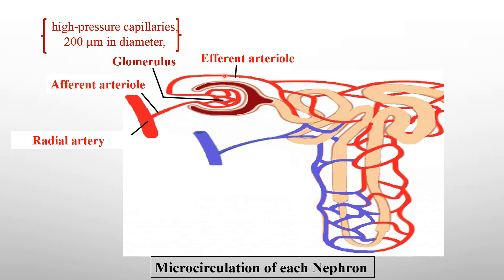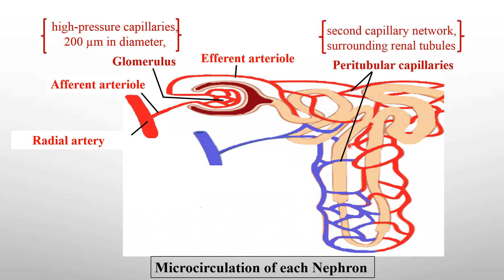The efferent arteriole forms a second capillary network called the peritubular capillaries. This second capillary network, the peritubular capillaries, surrounds the renal tubules.